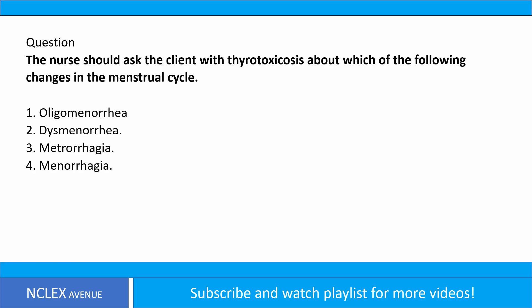Question. The nurse should ask the client with thyrotoxicosis about which of the following changes in the menstrual cycle? 1. Oligomenorrhea. 2. Dysmenorrhea. 3. Menorrhagia. 4. Menorrhagia. Answer.